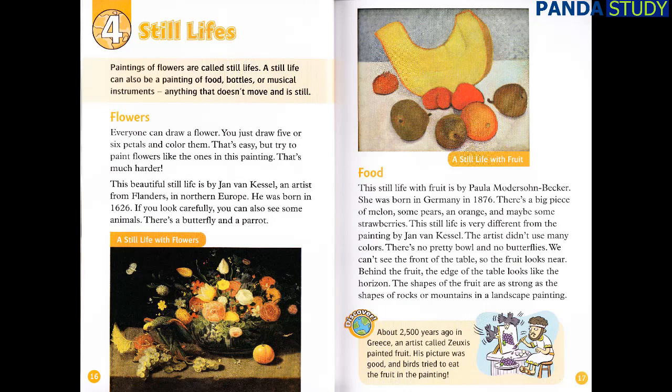Paintings of flowers are called still lifes. A still life can also be a painting of food, bottles or musical instruments — anything that doesn't move and is still. Everyone can draw a flower: you just draw five or six petals and colour them. But try to paint flowers like the ones in this painting — that's much harder. This beautiful still life is by Jan van Kessel, an artist from Flanders in Northern Europe, born in 1626. If you look carefully, you can also see some animals — there's a butterfly and a parrot.